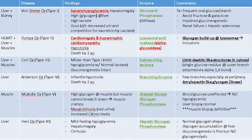The best way to approach studying glycogen storage diseases is having a fundamental knowledge of basic biochemistry. Knowing which enzyme is deficient for each disease will help you deduce most of the clinical findings. The enzyme deficiency will be mentioned first, then worked through a table that will make sense once you memorize the enzyme associated with each disease.